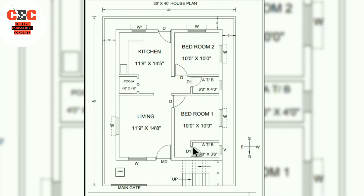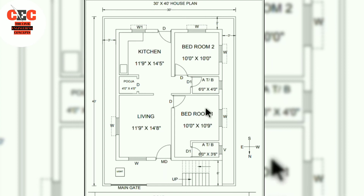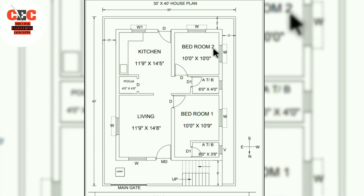Coming to windows, two windows of size 4 feet by 4 feet are provided in the living room. In the kitchen, a window of size 3 feet by 4 feet is provided. In bedroom one, a window of size 4 feet by 4 feet is provided. In bedroom two, two windows of size 4 feet by 4 feet are provided.